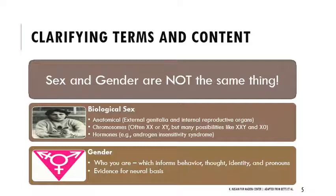Gender is who you are — it informs your behavior, thoughts, identity, and pronouns. There's some evidence for a neural basis behind it, but gender is not what we're talking about here. We're talking about gametogenesis and hormone cycles.